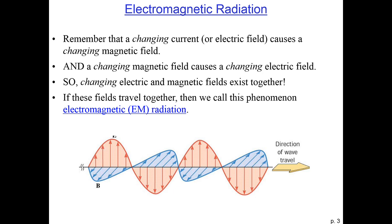And this propagating wave is called electromagnetic radiation, or EM radiation. And this is what makes up all electromagnetic radiation, from visible light to x-rays to radio waves.